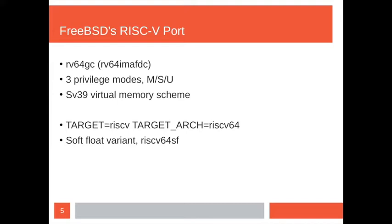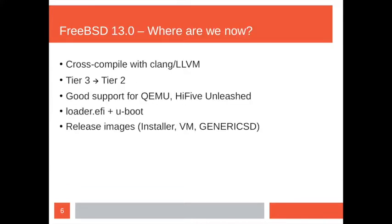There is a soft float variant supported in the tree where you don't need hardware floating point. That doesn't get as much attention and it's an open question whether we'll need to continue supporting it in the future, but it's low cost right now. FreeBSD just had a major release of 13.0, so for the RISC-V port — where are we as of FreeBSD 13?